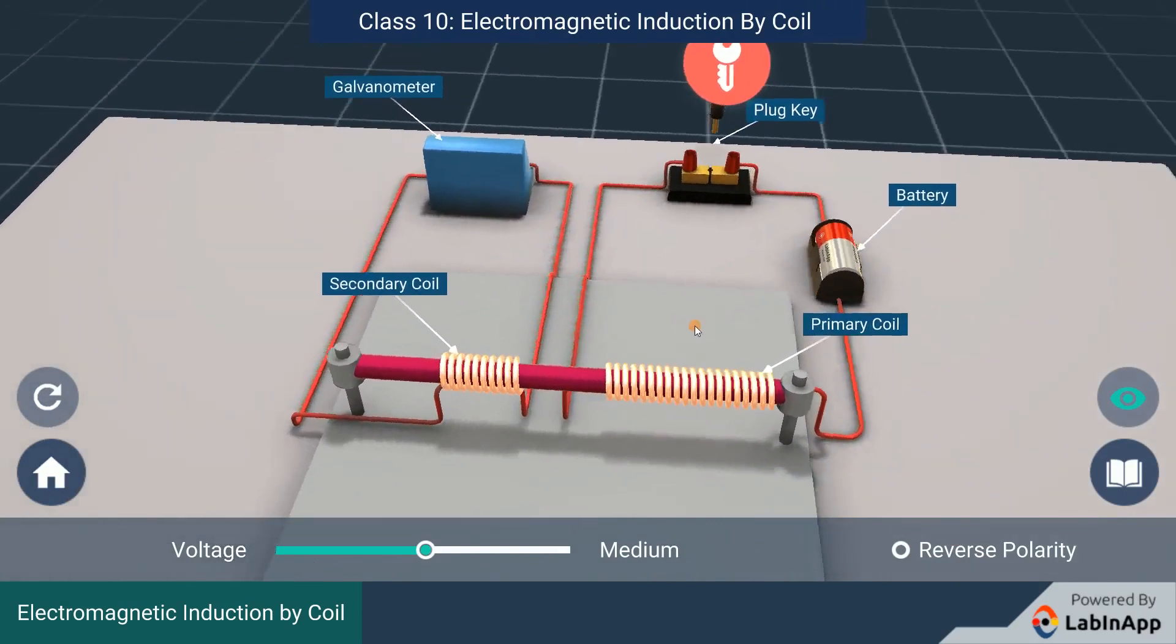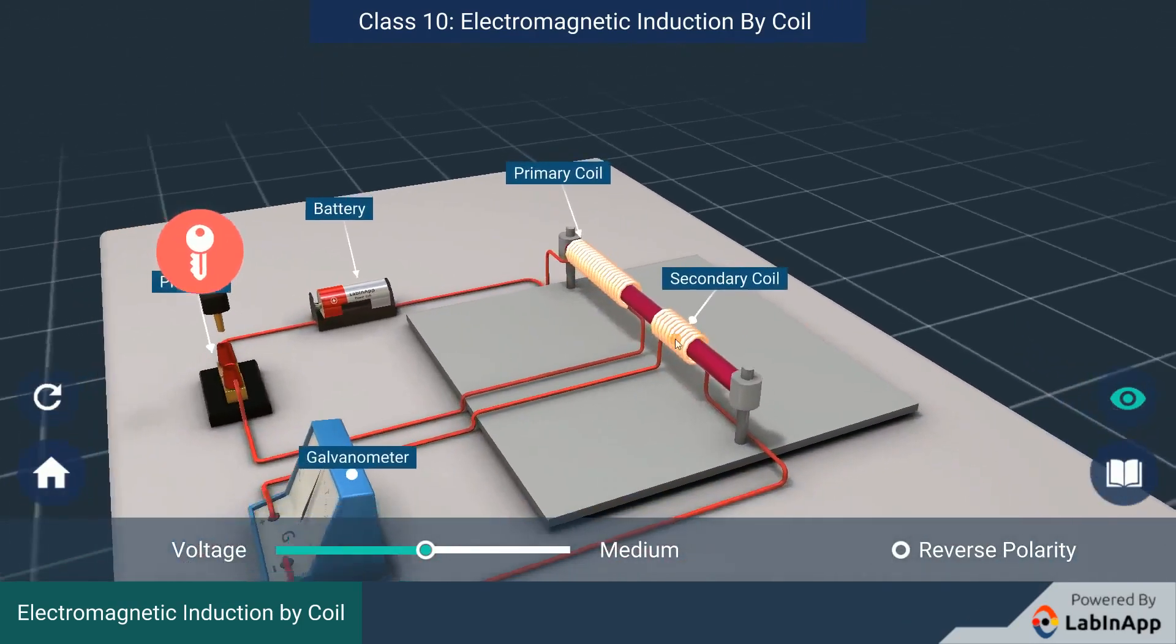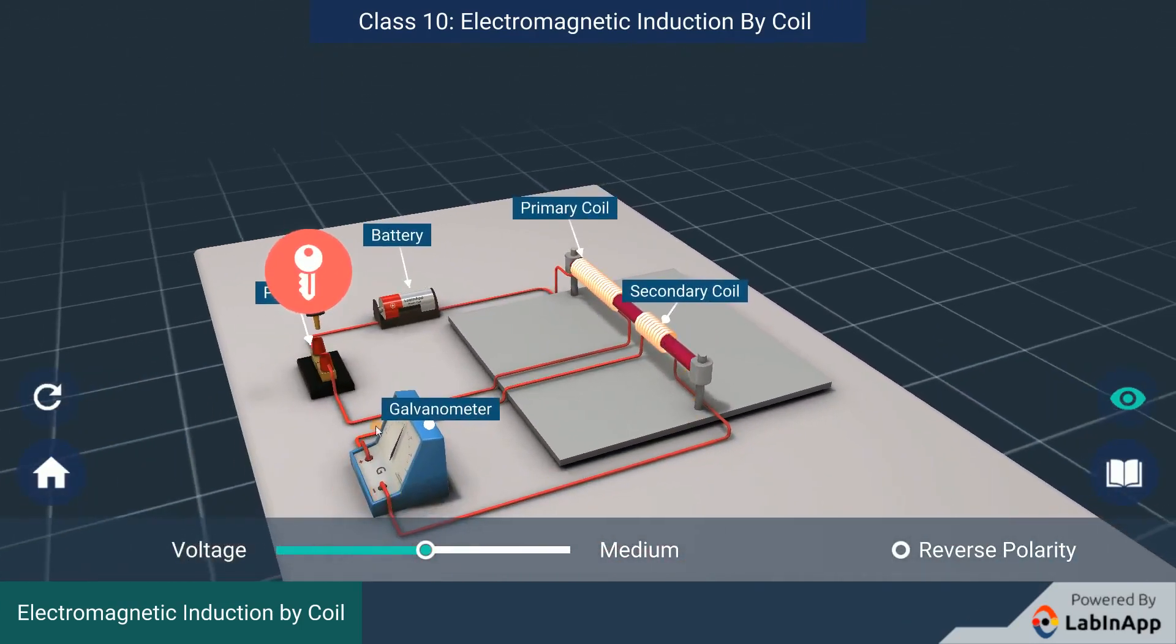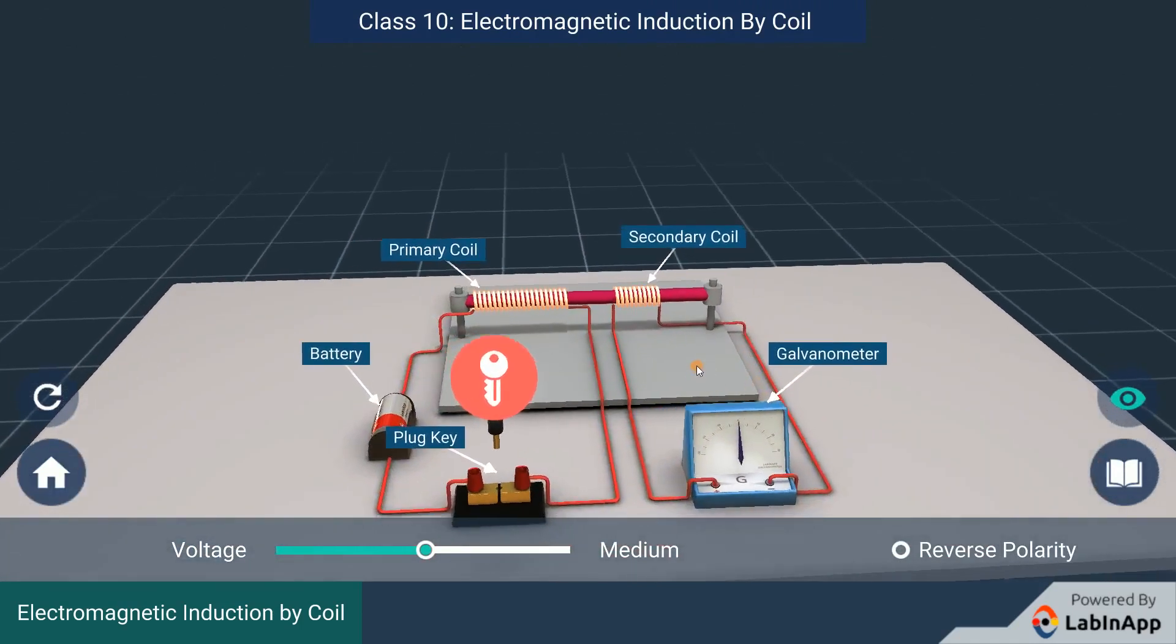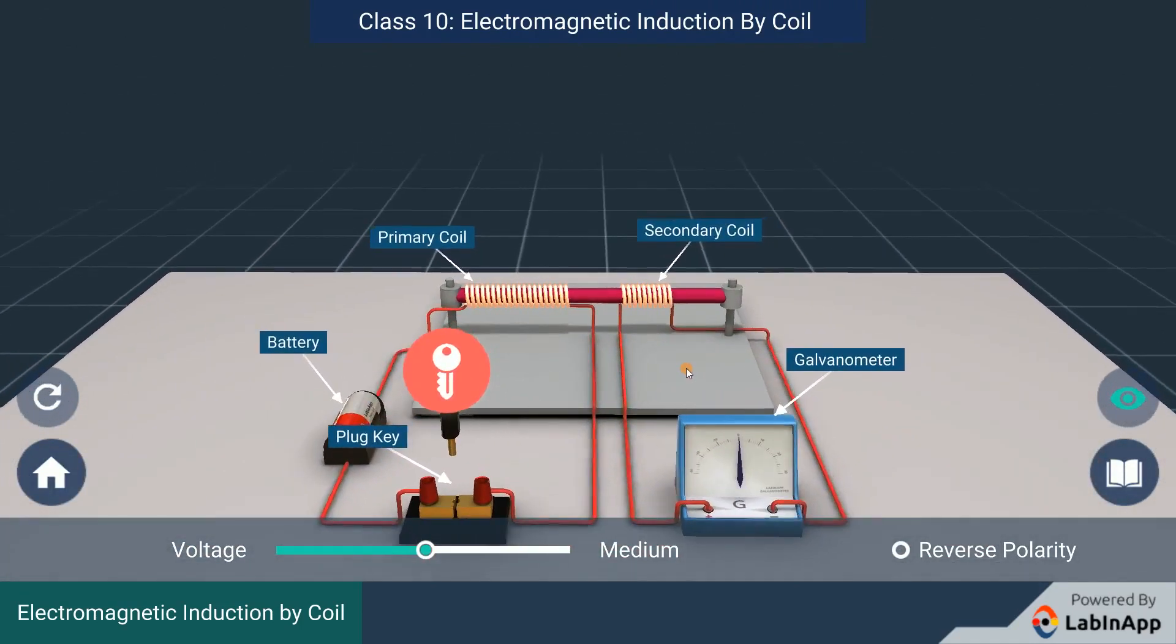And the other coil is only connected to a galvanometer, called the secondary coil. Insert the plug key and observe the galvanometer for deflection.